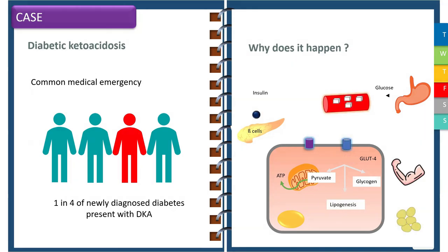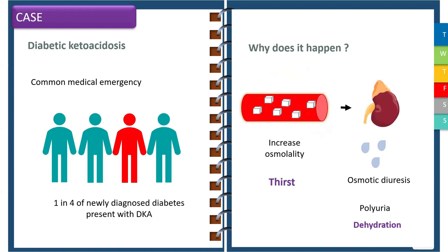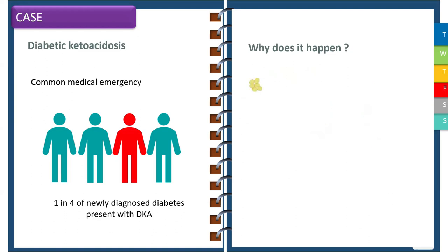In diabetic ketoacidosis, glucose molecules are unable to enter cells due to lack of insulin or a defect in the receptor. This results in accumulation of glucose in the blood vessels, leading to hyperglycemia. Excess glucose is cleared by the kidneys via osmotic diuresis, causing polyuria and dehydration. Increased osmolality stimulates the thirst centers, resulting in thirst. The hormone-sensitive lipase, normally inhibited by insulin, becomes active, leading to excessive lipolysis with formation of glycerol and fatty acids.